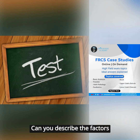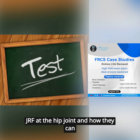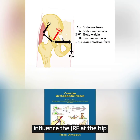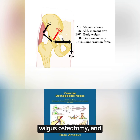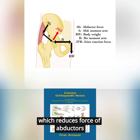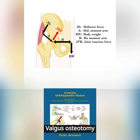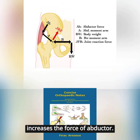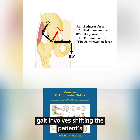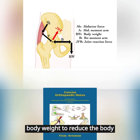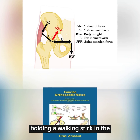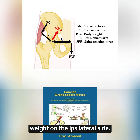Can you describe the factors that can influence the JRF at the hip joint and how they can be managed? Several factors can influence the JRF at the hip joint, such as coxa vara, valgus osteotomy, and Trendelenburg gait. Coxa vara causes an increase in the abductor moment arm, which reduces the force of abductors and the joint reaction forces. Valgus osteotomy causes a shortening of the abductor moment arm and therefore increases the force of abductor. Trendelenburg gait involves shifting the patient's body weight to reduce the body weight moment arm. Ways to reduce the hip JRF include losing weight, holding a walking stick in the contralateral hand, or carrying a weight on the ipsilateral side.